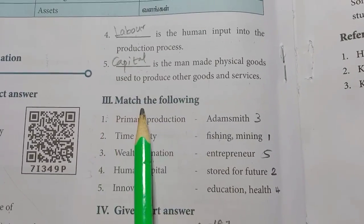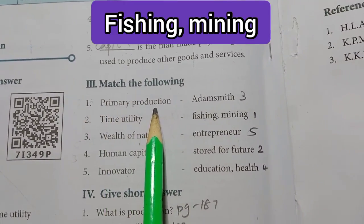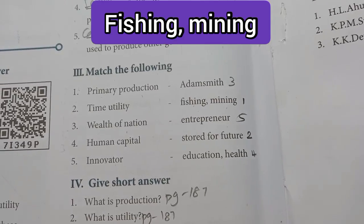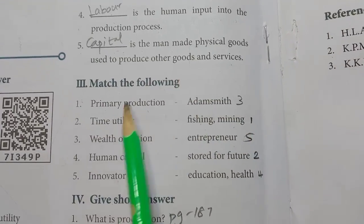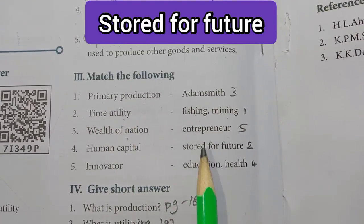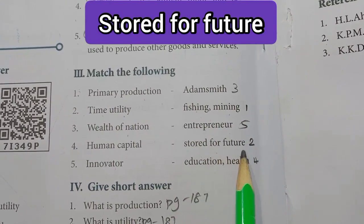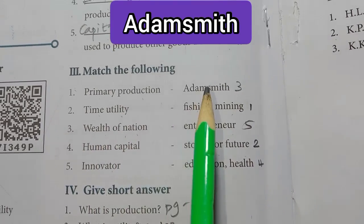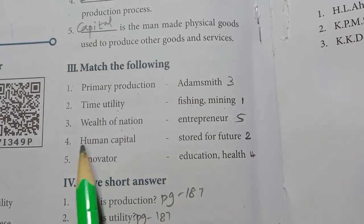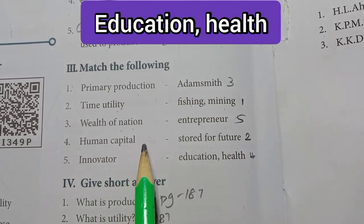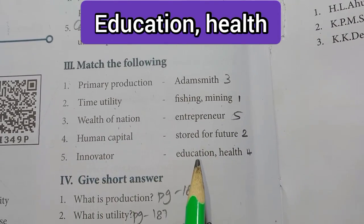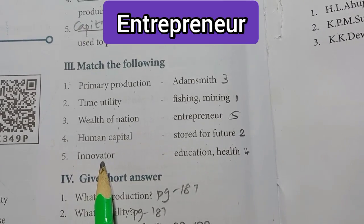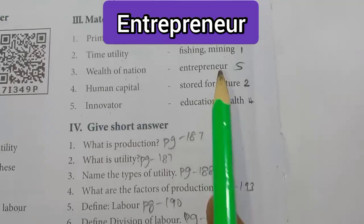Roman No. 3, Match the Following. First one: Primary Production — Fishing, Mining. Second one: Time Utility — Stored for Future. Third one: Wealth of Nation — Adam Smith. Fourth one: Human Capital — Education, Health. Fifth one: Innovator — Entrepreneur.